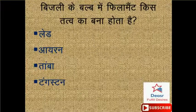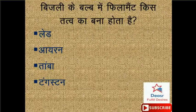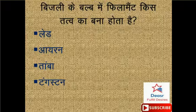Bijlee ke bulb mein filament kis tatva ka bana hota hai? Options: lead ka, iron ka, tambe ka, tungsten ka. Toh doston, iska sahih jawab hai option number D - tungsten.